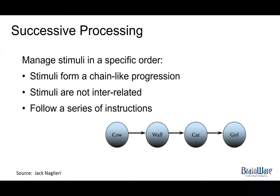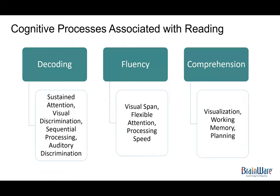A real-world example of successive processing is following a set of directions: please go up to your room and get your soccer uniform; on the way down, bring your spelling words; also grab your orange juice and toast on the way out. Very often by the time the child gets to the car, none of that may be with them. This is how we think versus what we know during the process of reading.